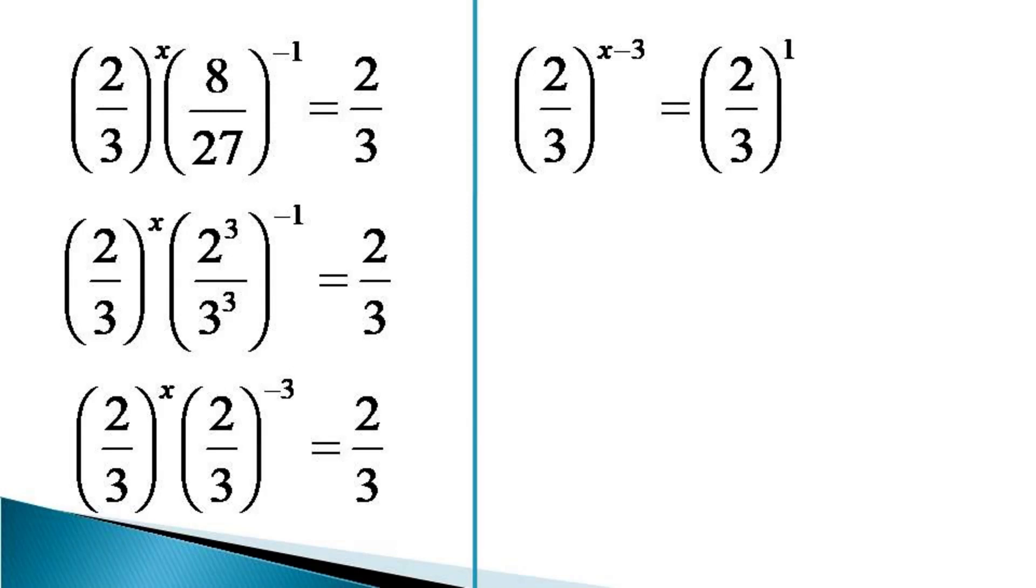Here also the bases are equal, so the powers must be equal. That gives us x - 3 = 1, or x = 4. This is the solution of the given equation, and we can verify that x = 4 satisfies the original equation.